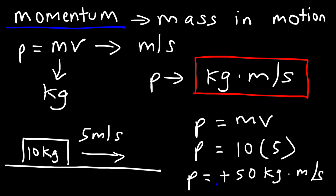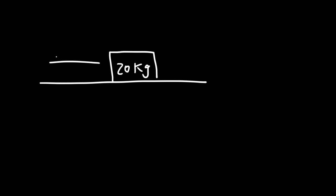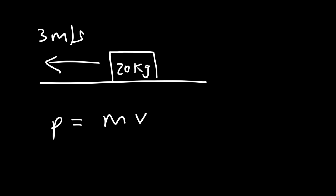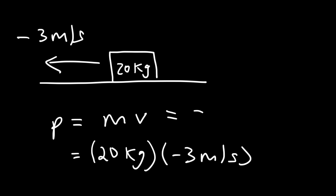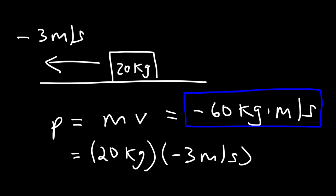The reason the momentum is positive is because the object is moving to the right. Now what if the object was moving to the left? For a 20 kilogram object moving at 3 meters per second to the left, the velocity is negative — negative 3 meters per second — because it's moving in the negative x direction. So if an object moves to the right, momentum is positive; if it moves to the left, momentum is negative.